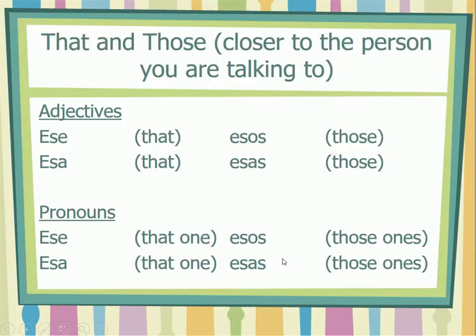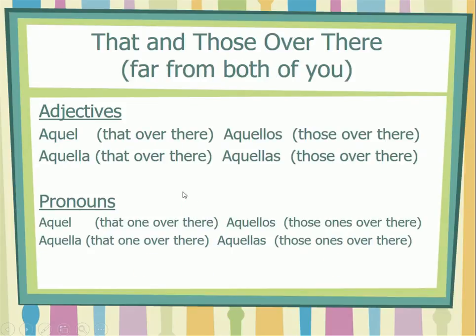If it's far from you — or closer to the person you're talking to — you're going to use ese, esa, esos, esas. Same forms work for the pronouns, with no accent marks. But remember, in Spanish we have that extra one meaning 'that over there' or 'that one over there': aquel, aquella, aquellos, aquellas — and the same thing applies for the pronouns.